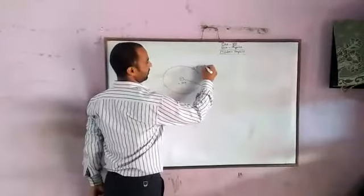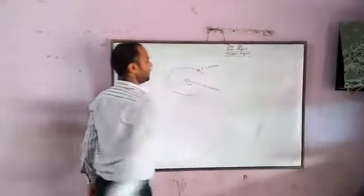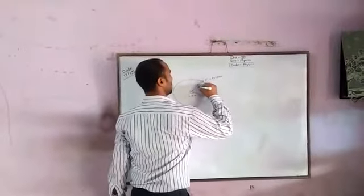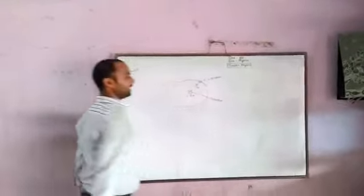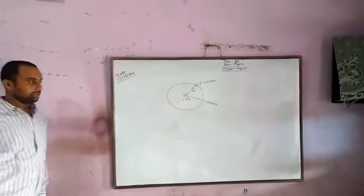And this is electron. These electrons are revolving around the nucleus. And this is the radius of the nth orbit. We have assumed to be R. The electron which is revolving in the nucleus is this.